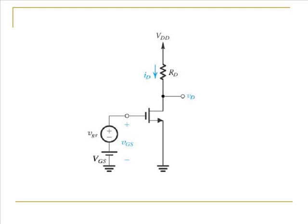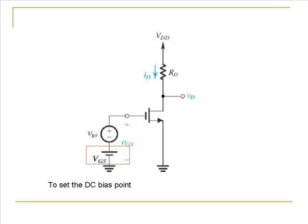Let's consider the circuit which is in the common source configuration. Notice that we are giving a voltage to the gate which consists of a DC voltage and an AC signal. The DC voltage, denoted by VGS, sets the DC bias point of the transistor. The AC signal, denoted by vgs, is the signal that we want to amplify using the MOSFET.